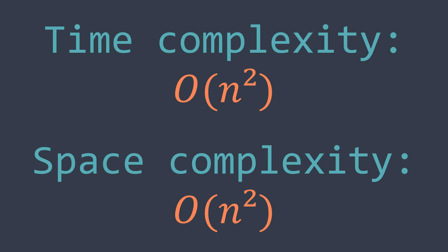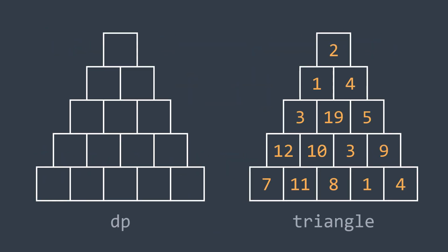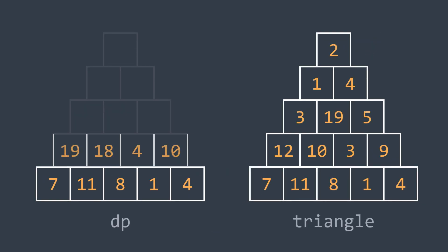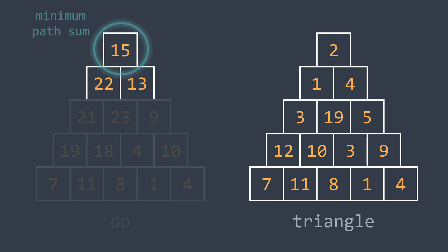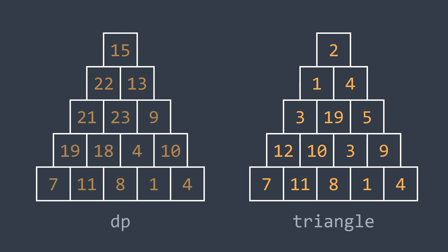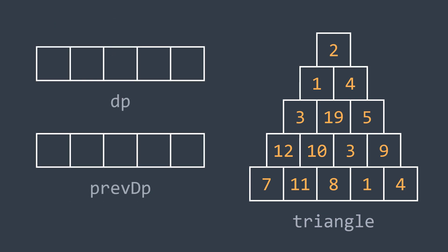Dynamic programming gave us a better time complexity than recursion — we got a polynomial time solution. But it has a drawback: the O(n²) space complexity, which we can optimize. We can do so because we always need only the actual row and the previous one, so instead of a whole 2D array, we just work with 2 rows at a time.